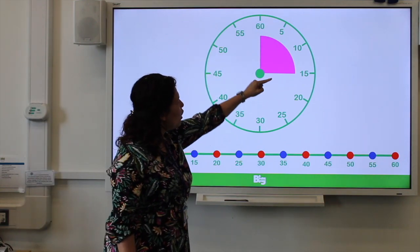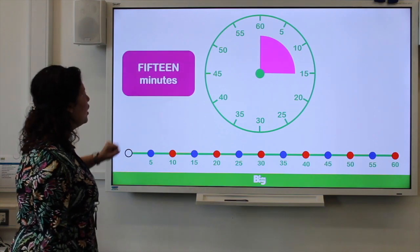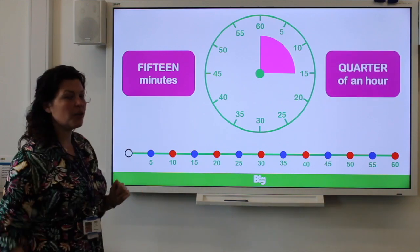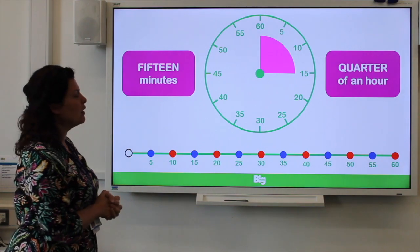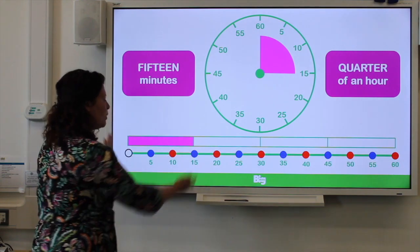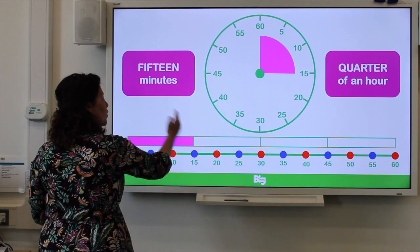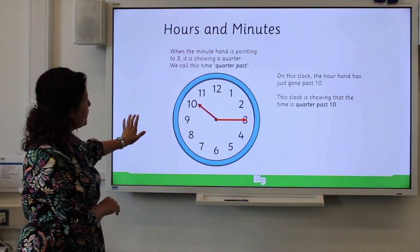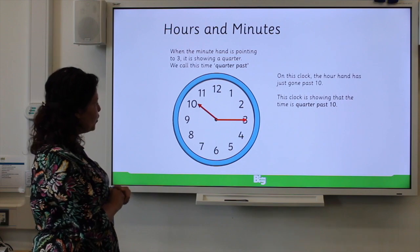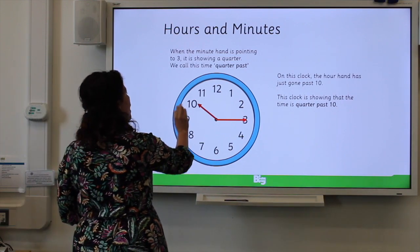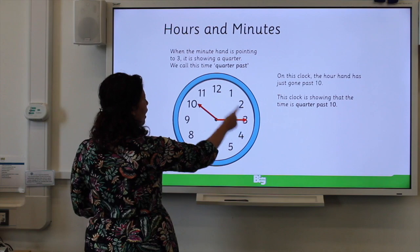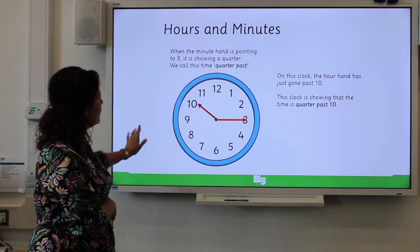Now we're on to quarter past. So quarter past is, or a quarter of the clock if you like, it's fifteen minutes. So if someone tells you in quarter of an hour we'll be going to bed, you know that you've just got fifteen minutes. If you had to see that in a bar model, remember we had the half past, now we've just got that quarter. Where is the long hand? Well the minute hand, this time, in quarter past, is pointing at the three. And the hour hand just goes past the hour. So in this clock, the time would be quarter past ten.